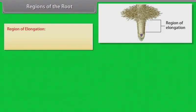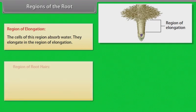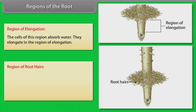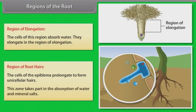Region of elongation: The cells of this region absorb water and elongate. Region of root hairs: The cells of the epiblema elongate to form unicellular hairs. This zone takes part in the absorption of water and mineral salts.